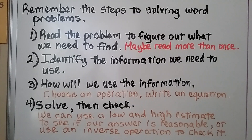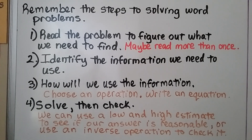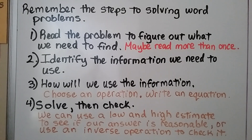Remember the steps to solving word problems. One, read the problem to figure out what we need to find — maybe read more than once. Two, identify the information we need to use. Three, how will we use the information? We need to choose an operation or write an equation. And four, we solve then check. We can use low and high estimates to see if our answer is reasonable, or use an inverse operation to check it.